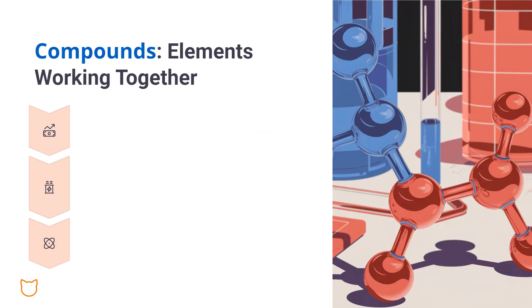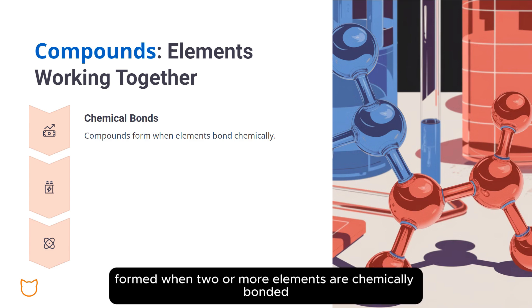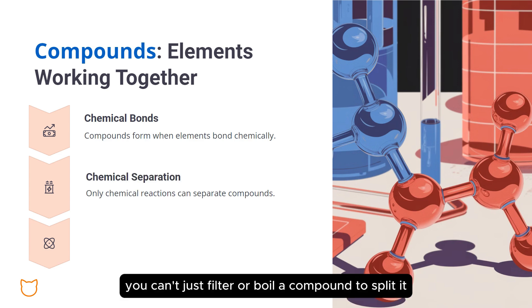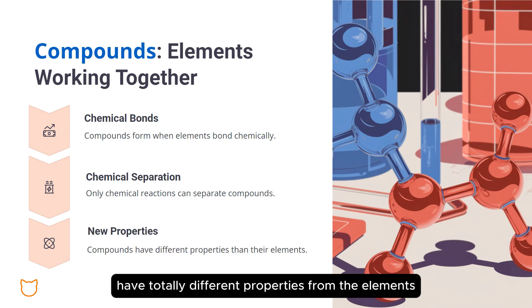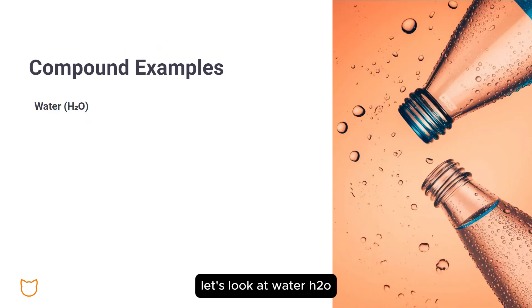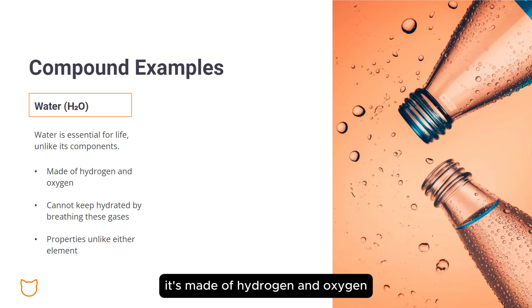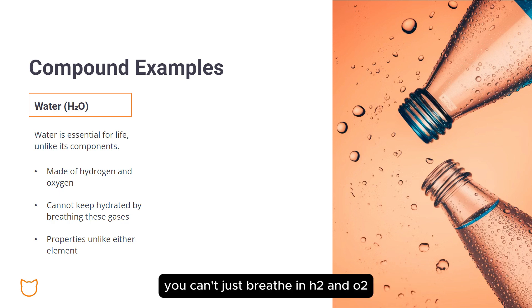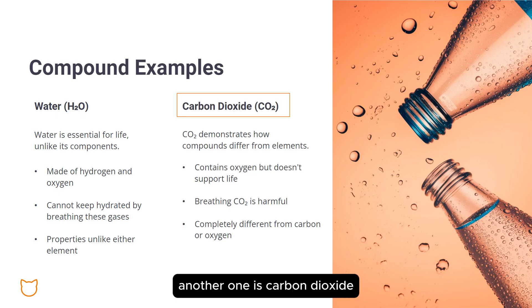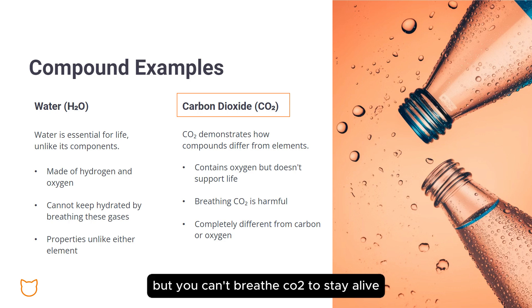Next, we have compounds. These are substances formed when two or more elements are chemically bonded. You can't just filter or boil a compound to split it — you need a chemical reaction to break the bonds. Also, compounds have totally different properties from the elements they're made of. Let's look at water, H2O: it's made of hydrogen and oxygen, both gases, but water is a liquid and essential for life. Another example is carbon dioxide, CO2 — it has oxygen in it, but you can't breathe CO2 to stay alive; you'll suffocate. That's how different a compound can be from its elements.